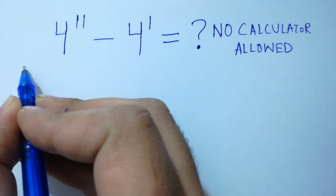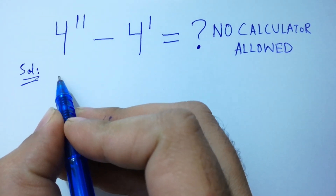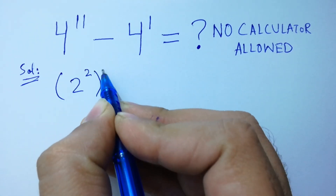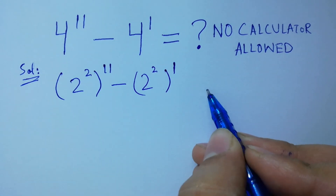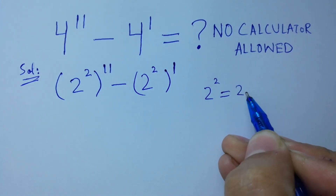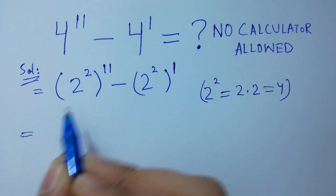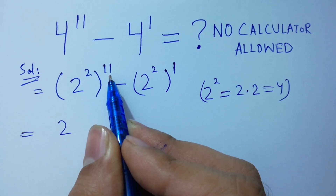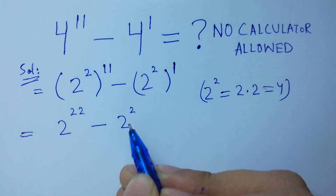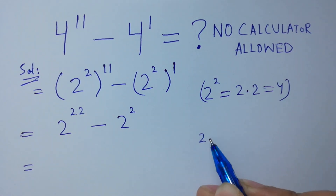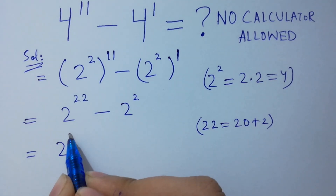Let's have a solution. This is the same as 2 squared to the power 11, minus 2 squared to the power 1, since 2 squared equals 2 times 2, which is 4. So we get 2 to the power 22 minus 2 squared. Since 22 equals 20 plus 2, it will be 2 to the power 20 plus 2, minus 2 to the power 2.